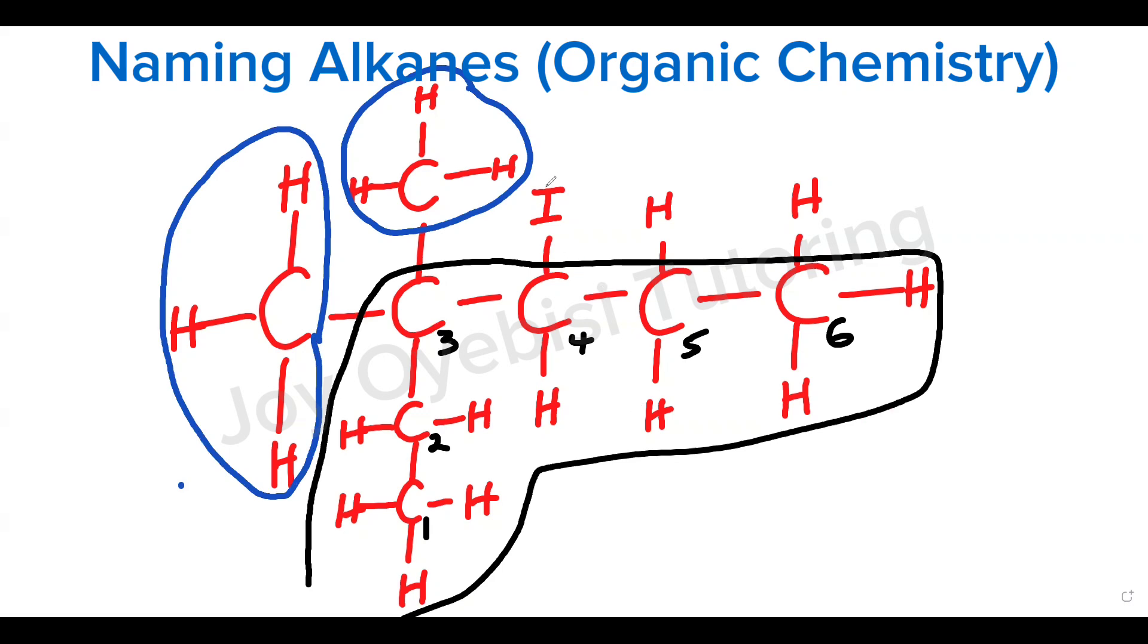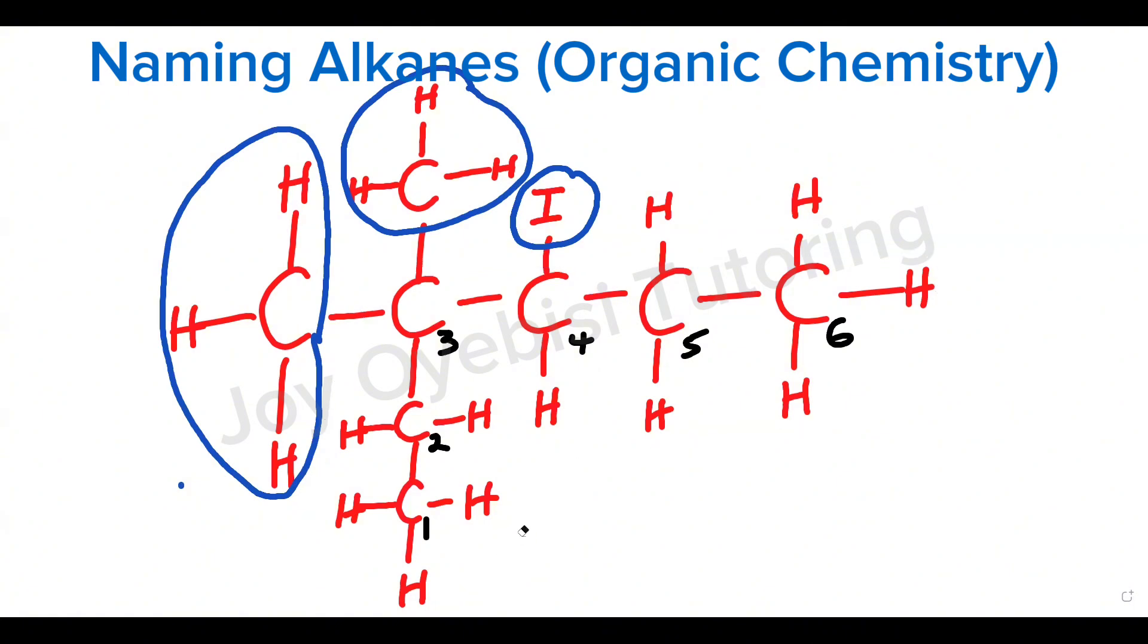Now there is also iodine right here. That is your substituent as well. So now we have all of that identified. We need to also remember that when we count the longest continuous chain, we must count from the side that gives the branches a lower number.